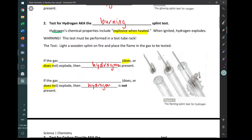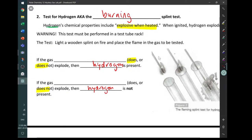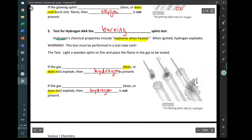The second test that we're going to do is a test for the gas called hydrogen. Now both oxygen and hydrogen are going to be clear, odorless, colorless, tasteless gases, and they wouldn't be possible to test with your senses. So we're going to use this burning splint test. Now one of hydrogen's chemical properties is the fact that it's explosive. So if we heat hydrogen up, it can explode. So when ignited, hydrogen explodes.